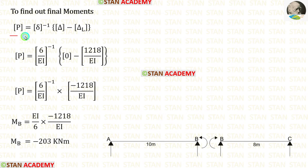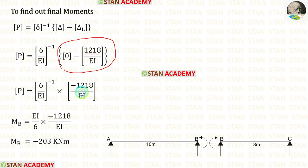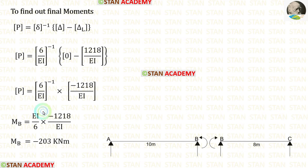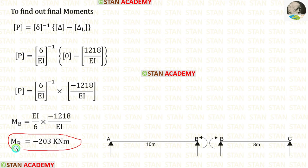In this formula, we have calculated all of the values — the flexibility matrix, delta matrix, and delta L matrix. We can apply all of the values. 0 minus 1218 gives minus 1218. When we make (6/EI) inverse, we get EI/6. Then we can cancel EI with EI. 1218/6 gives 203. We know that P matrix is the final moment matrix. In this problem, we had only one coordinate — at coordinate B, we removed MB — so the final answer will be MB. In this analysis, we have calculated moment MB, which is equal to minus 203 kilo Newton meter.